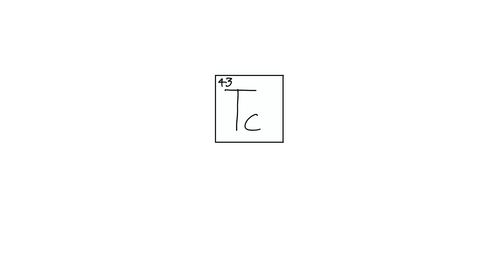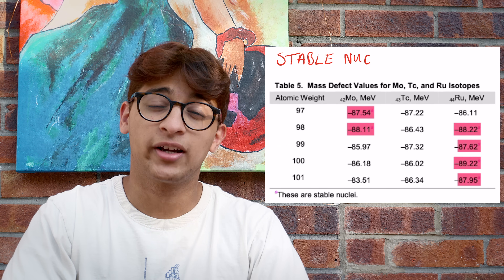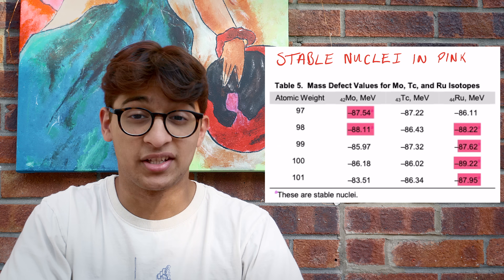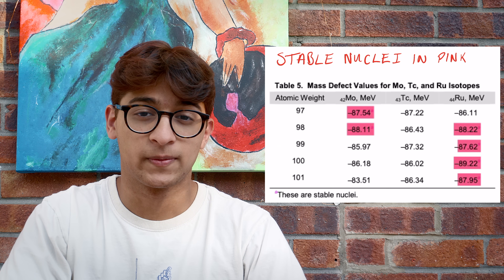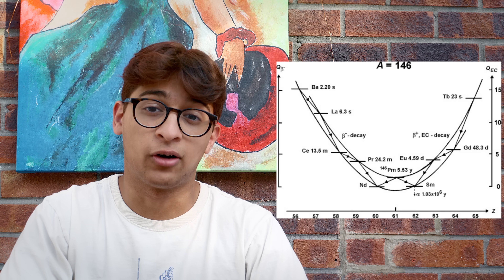So if technetium has stable isotopes, then both molybdenum and ruthenium must not have stable isotopes with identical atomic weights. As you can see in the table, the rule does correctly predict that technetium doesn't have any stable isotopes. It also correctly predicts the radioactivity of promethium, another outlier.